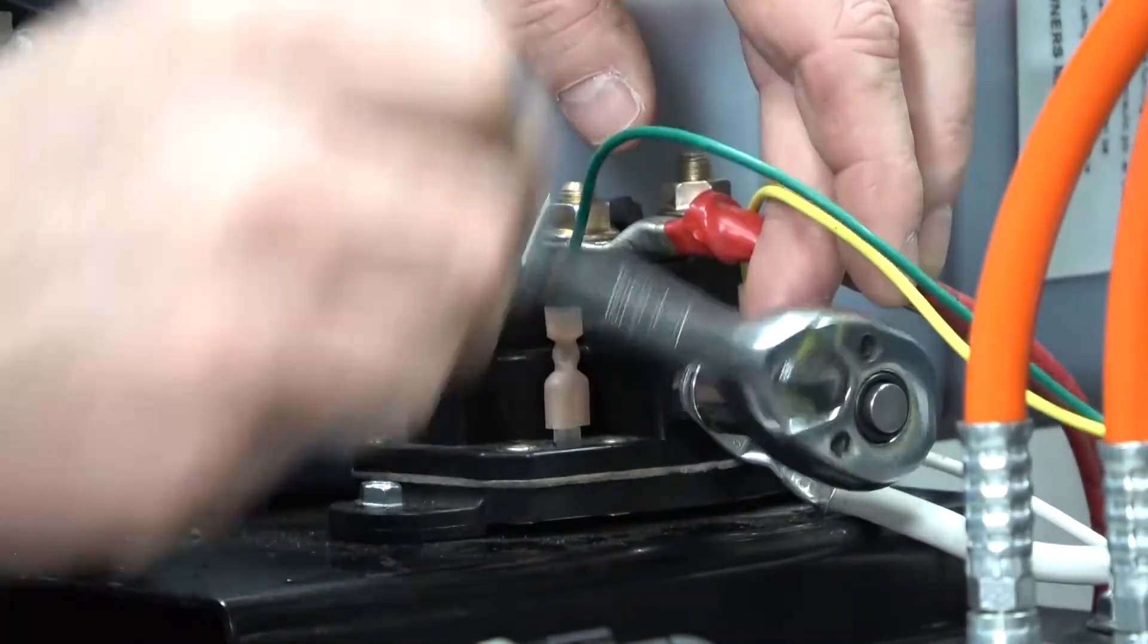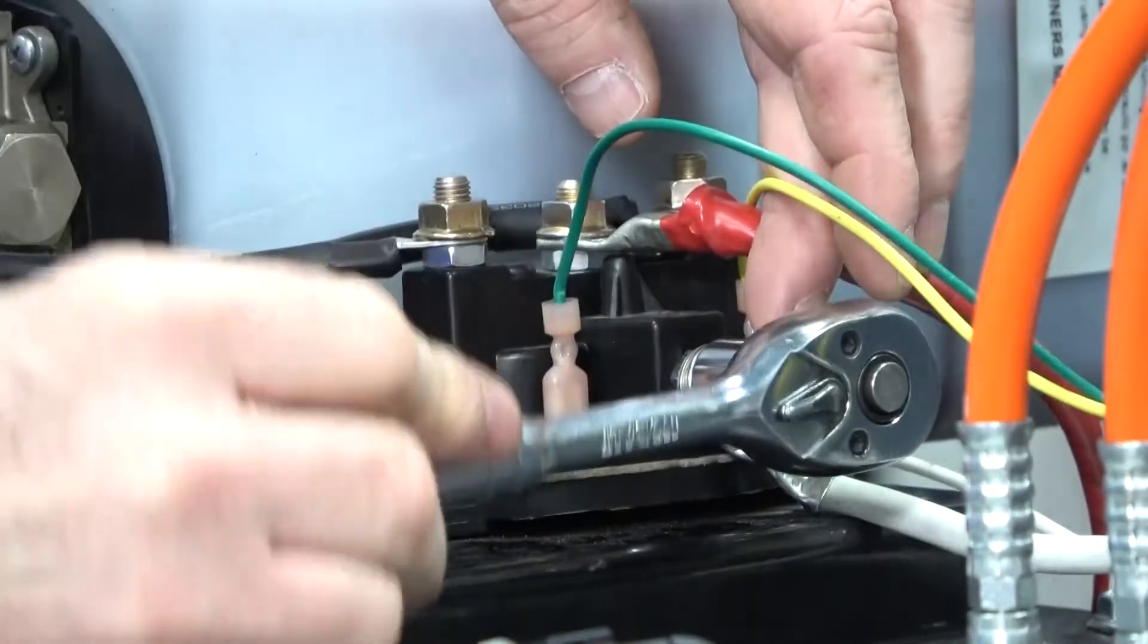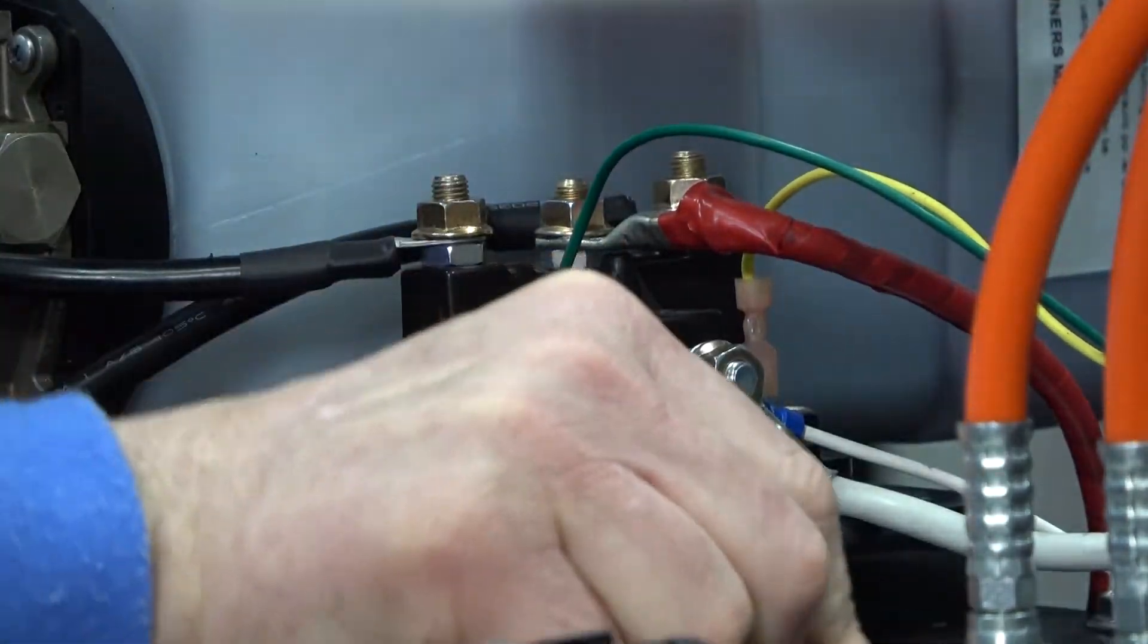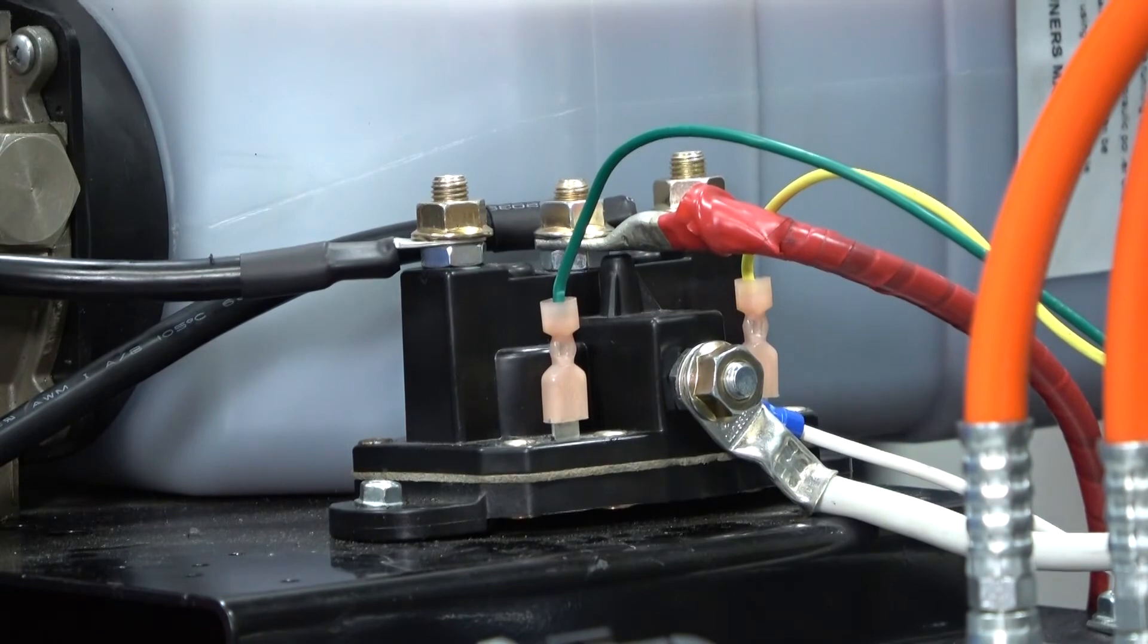Finally, reconnect the power from the battery, and that completes the dual polarity solenoid replacement on a towable bi-rotational power unit for the hydraulic level-up leveling system.